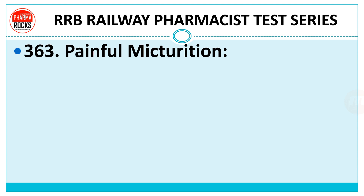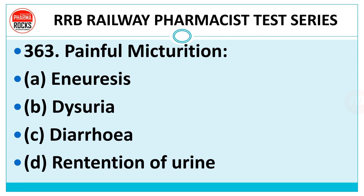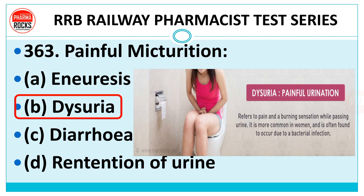Question 363: Painful micturition means — Option A: aneurysm. Option B: dysuria. Option C: diarrhea. Option D: retention of urine. The right answer is dysuria, meaning painful urination. When you go for urination, you get a burning sensation — it is more common in women and is often caused by a bacterial infection, i.e., urinary tract infection. So it is called painful micturition, and in other words it is called dysuria.